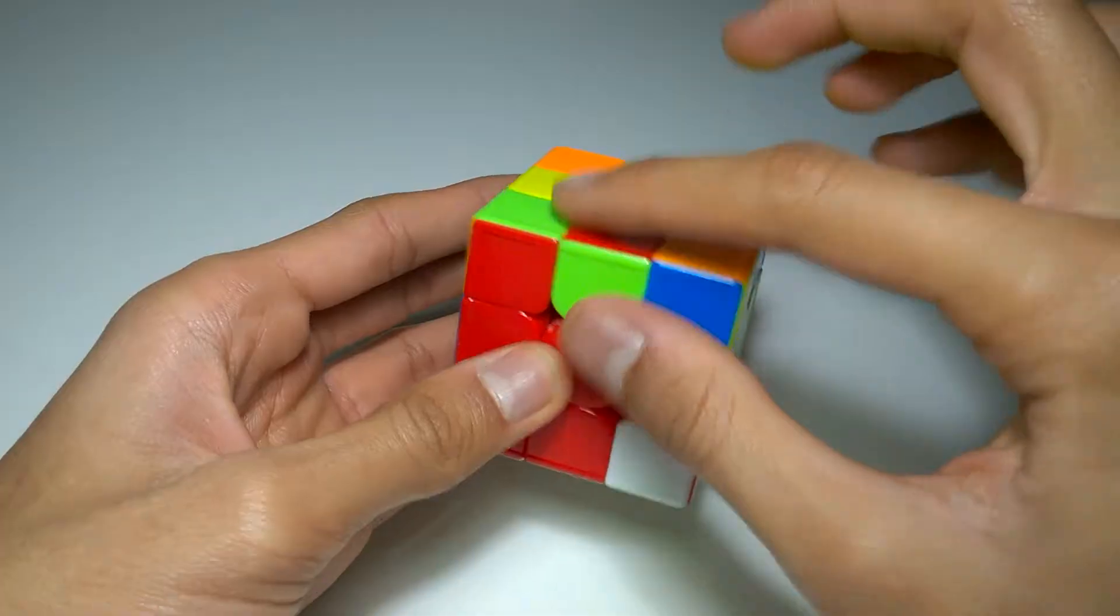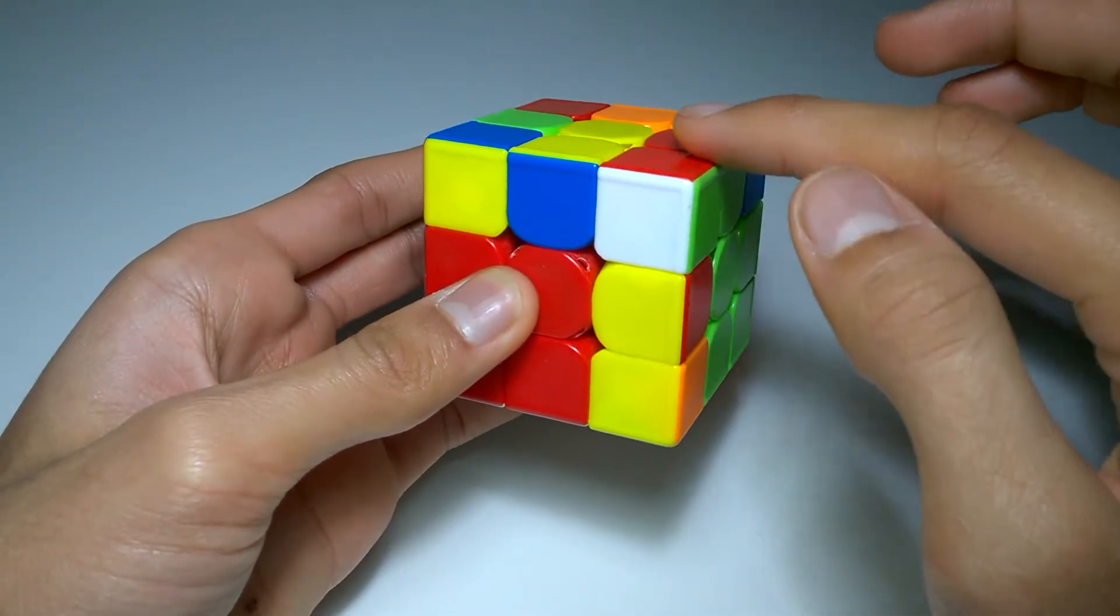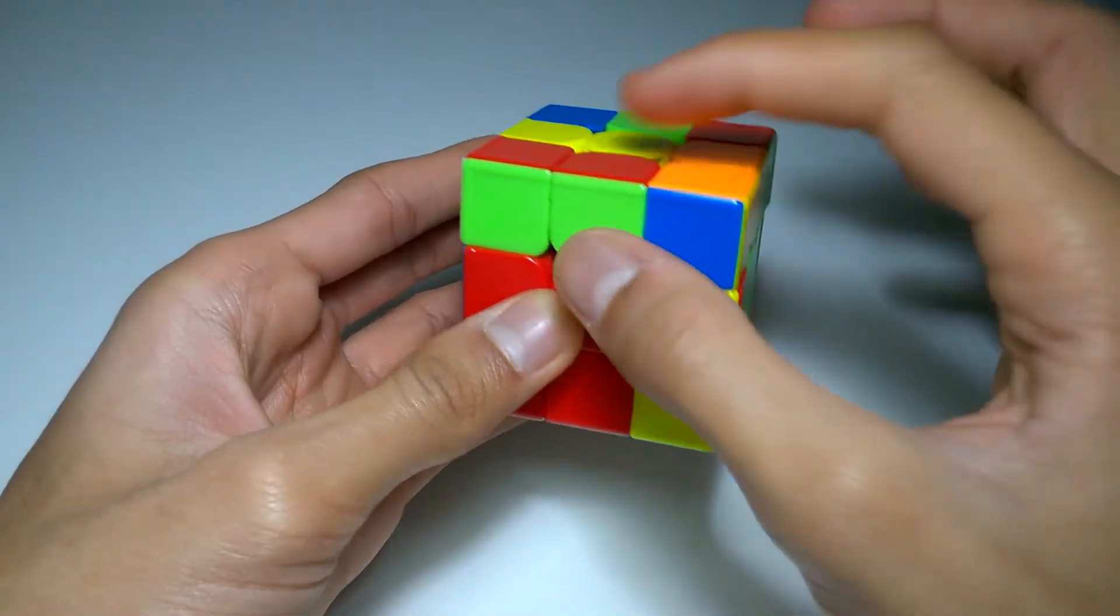The general idea is that you find two pieces which you're going to solve, you do something called pairing them up, and then you insert your completed pair, which will look something like this.